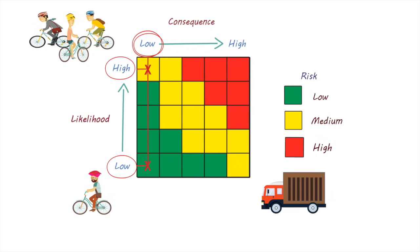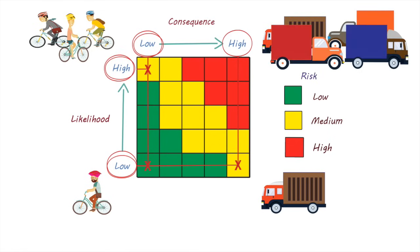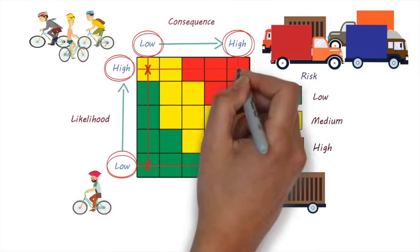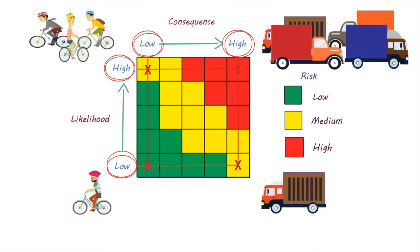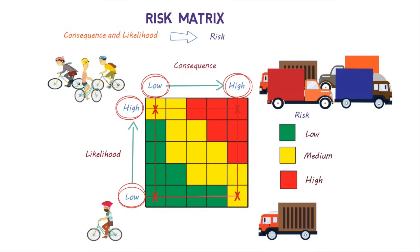Let's consider the truck now. In the scenario where trucks are infrequent, the likelihood of a crash is low but the consequence is high—the overall risk is medium. And if it's a busy truck route, the likelihood and consequence are both high, and therefore the overall risk is high.